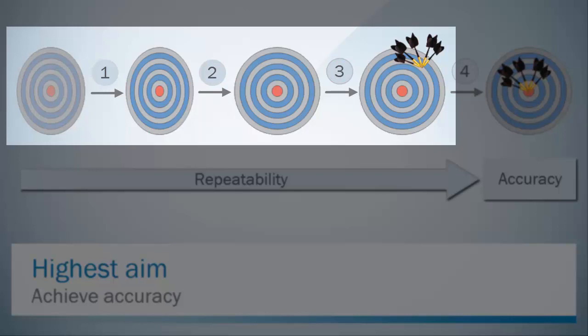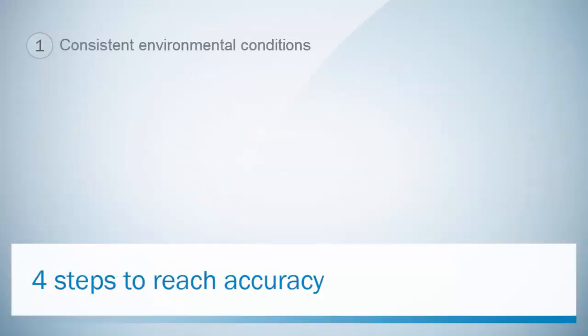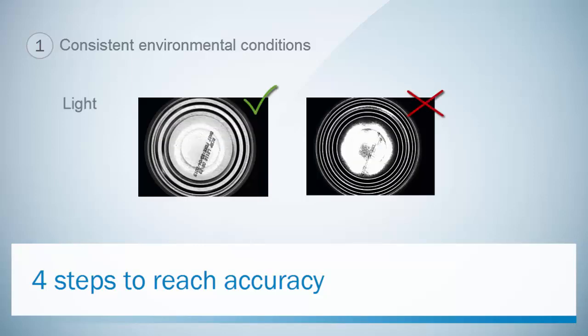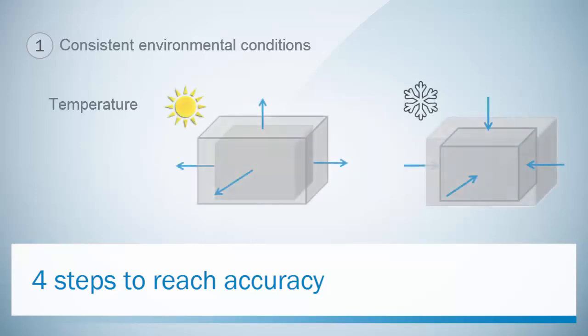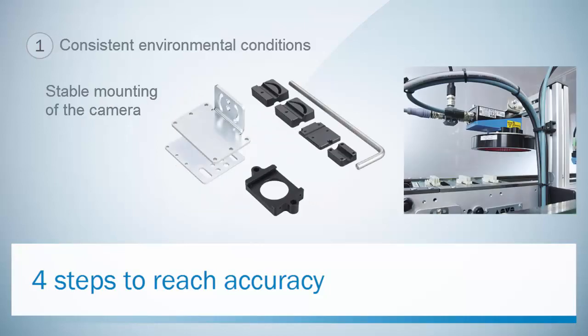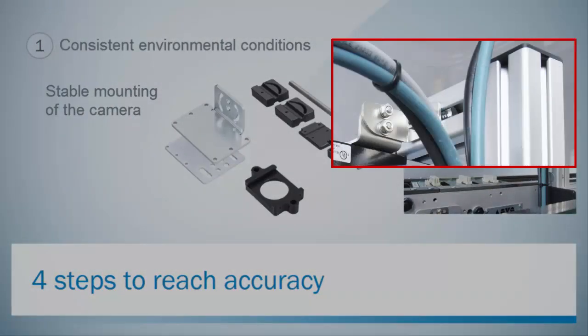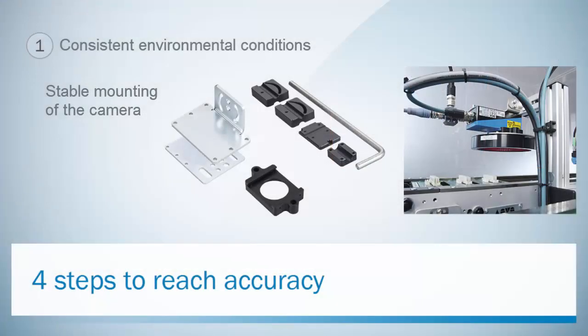Let us look into each step in detail. First, secure consistent environmental conditions such as suitable lighting, a stable temperature to avoid material variations, and mount the sensor so it is not affected by disturbances in the industrial environment.